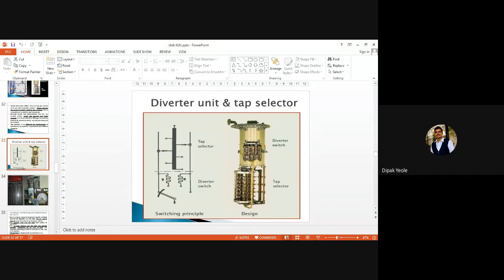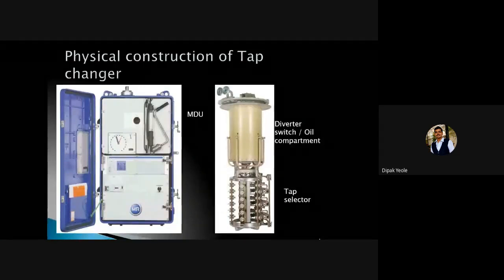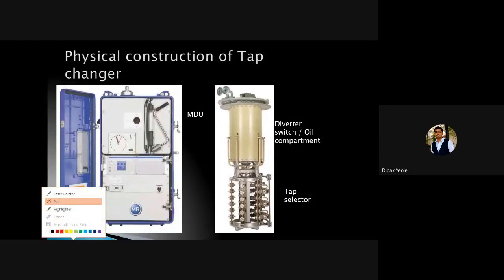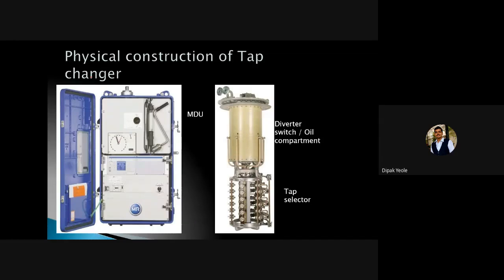In the last class, we discussed this concept very clearly, and I hope you understood it. Because in your exam, the question will be asked to explain the condition monitoring of on-load tap changer. There is no point covered for on-load tap changer in your syllabus inside electrical machines or power system. So I have to cover that particular topic first, and then we can do the condition monitoring in a better way for our tap changer.